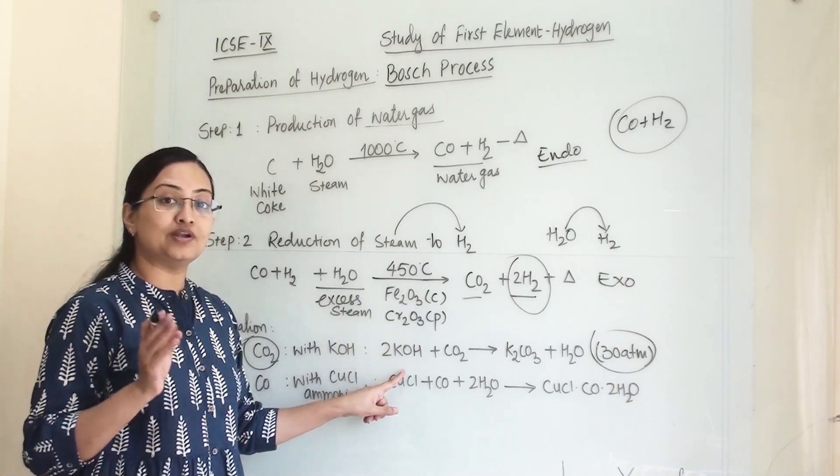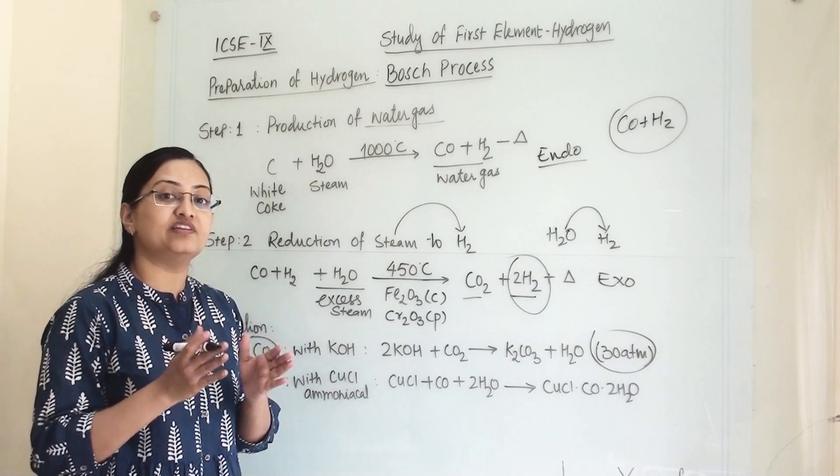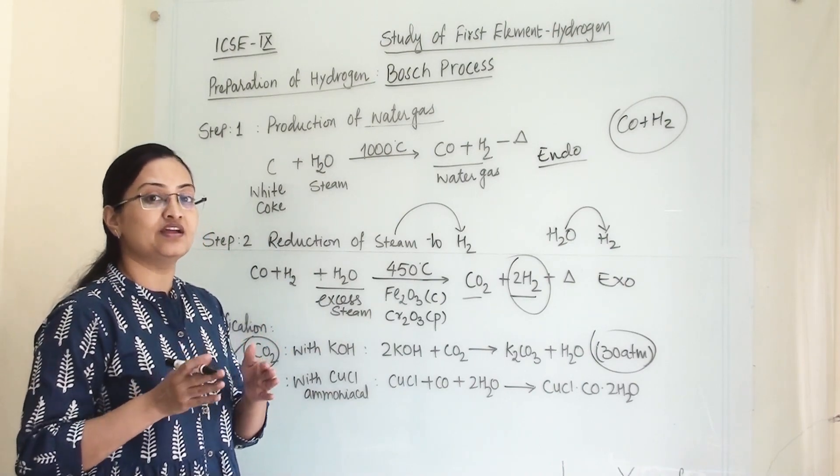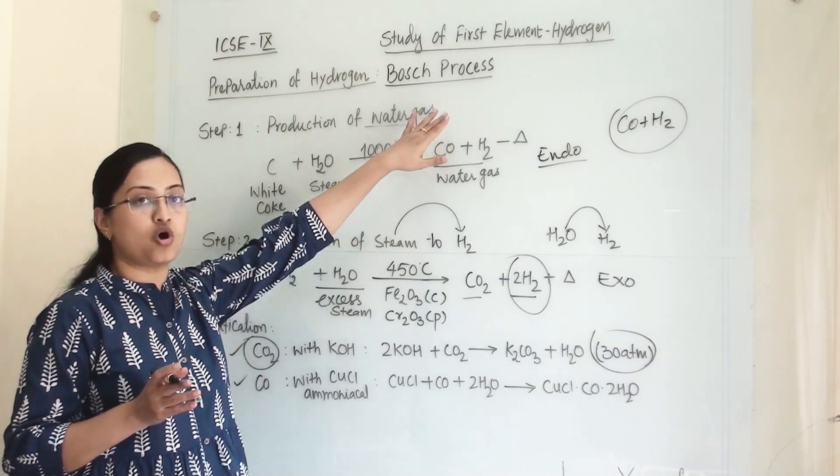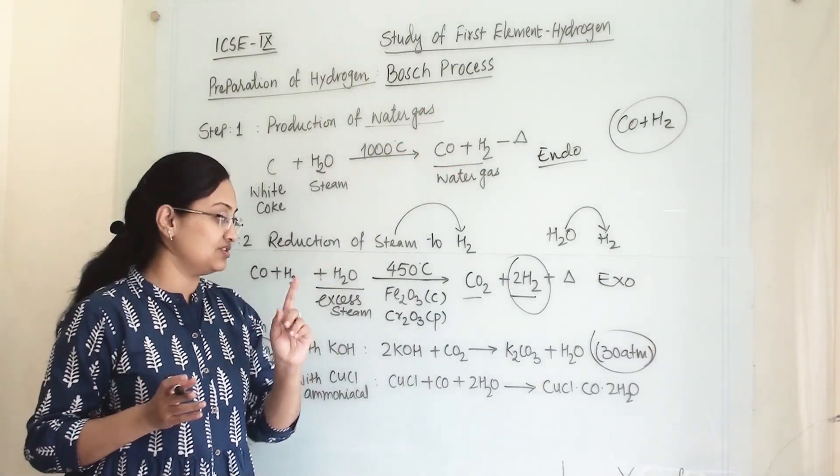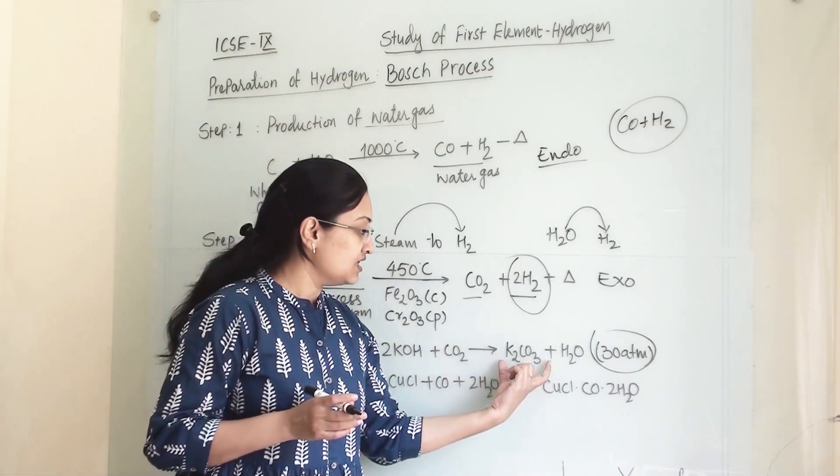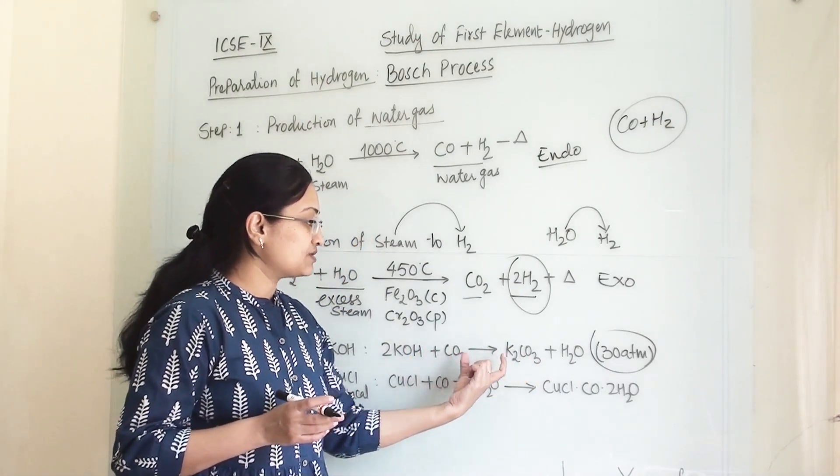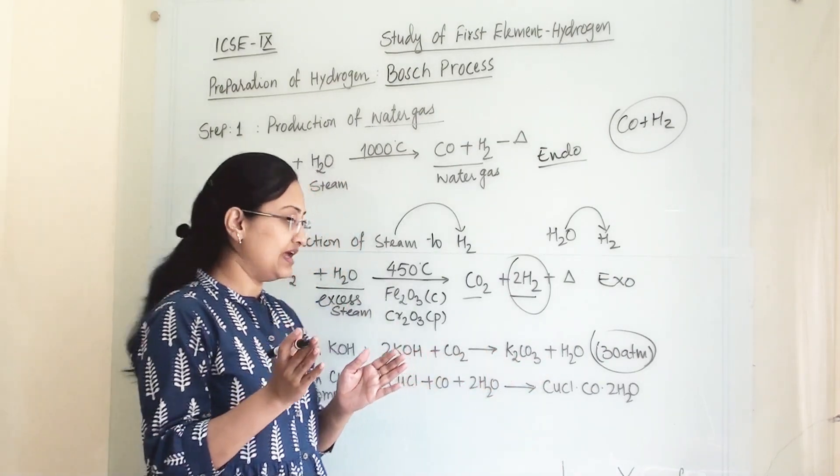This can be asked in a one-mark question: how does potassium hydroxide react with carbon dioxide when we are eliminating impurity of carbon dioxide in Bosch process of preparing hydrogen? Then we need to write this equation and show that carbon dioxide will react with potassium and form this compound. So it will be eliminated.